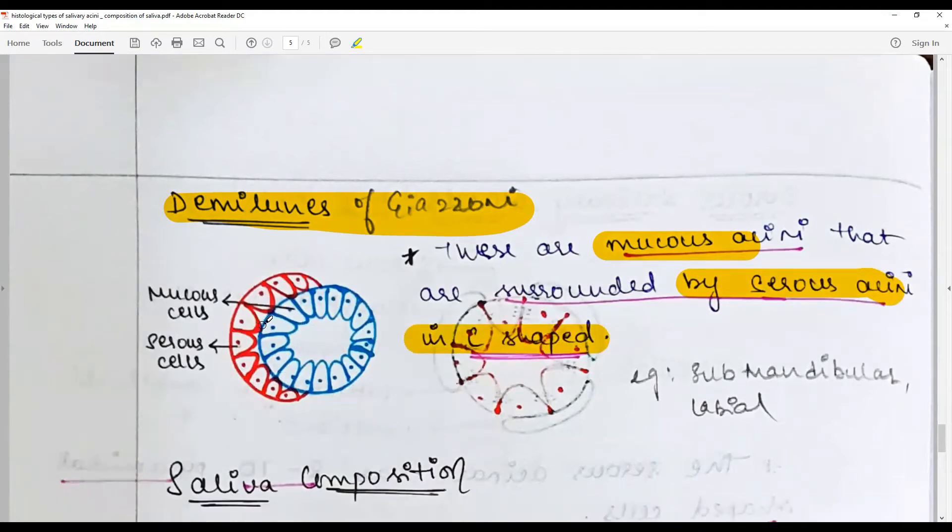They are found in the submandibular and labial glands. They are believed to be rich in lysozymes. These serous units, C-shaped serous units that overlie the mucous acini, are believed to be rich in lysozymes. Now researchers believe that these are a processing artifact more than a distinct histological entity, but there is no unanimous verdict on this.